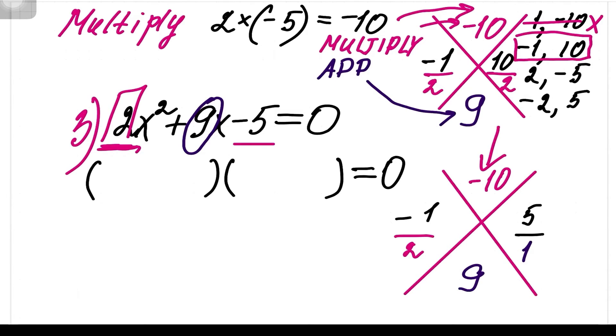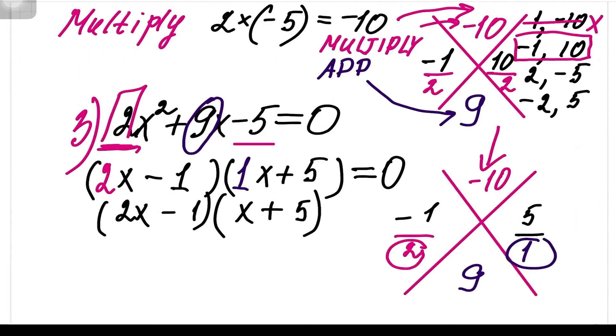Now, we're going to fill out the gaps in the sets. This bottom number 2 from the first fraction goes as a coefficient in front of x for the first set of parentheses. The top number negative 1 goes as a constant for the first set. The same thing applies for the second fraction. Bottom number 1 goes as a coefficient in front of x and the top number goes as a constant. Now, let's clean it up. 2x minus 1 times x plus 5 equals 0.